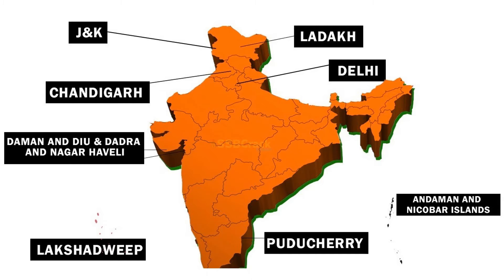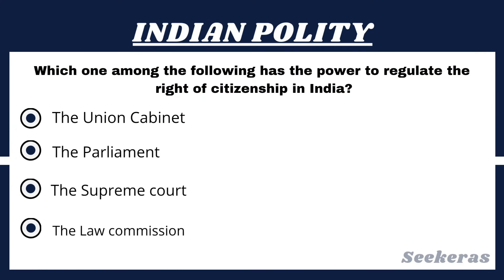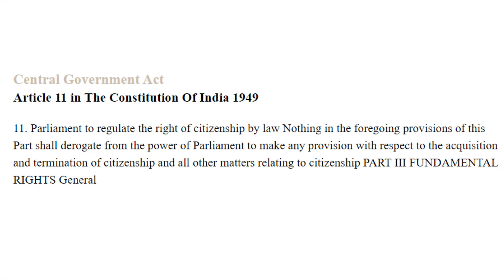Question number 3. Which one among the following has the power to regulate the right of citizenship in India? Option 1, The Union Cabinet; Option 2, The Parliament; Option 3, The Supreme Court; or Option 4, The Law Commission. The answer is Option 2, The Parliament. Article 11 empowers the Indian Parliament to make regulations on citizenship by law.